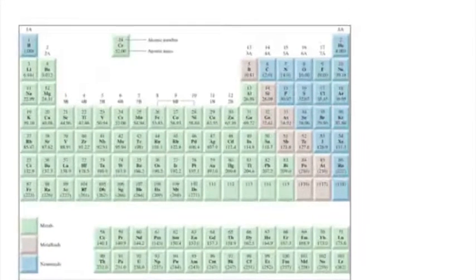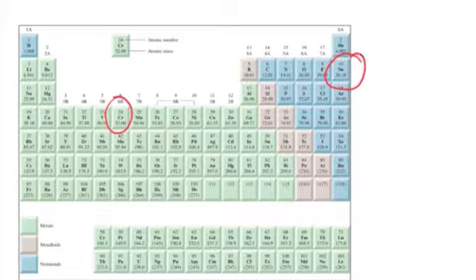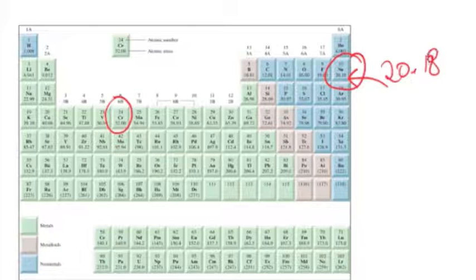For chromium, which we just looked at, chromium is on the periodic table right here. It has an atomic mass of 52.00 rounded off to the 100th place. That's highly unusual. Normally the atomic mass is some fraction in the 10th and 100th place. For example, let's look at neon. The atomic mass for neon is 20.18.